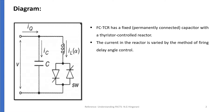FCTCR is a basic VAR generator arrangement using a fixed, i.e. permanently connected, capacitor with a Thyristor Controlled Reactor. The current in the reactor is varied by the method of firing delay angle control. The fixed capacitor in practice is usually substituted fully or partially by a filter network that has the necessary capacitive impedance at the fundamental frequency to generate the reactive power required, but it provides a low impedance at selected frequencies to shunt the dominant harmonics produced by TCR.